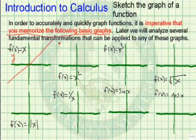F of x equals x squared is the graph of a parabola. Notice the range is only y greater than or equal to zero.